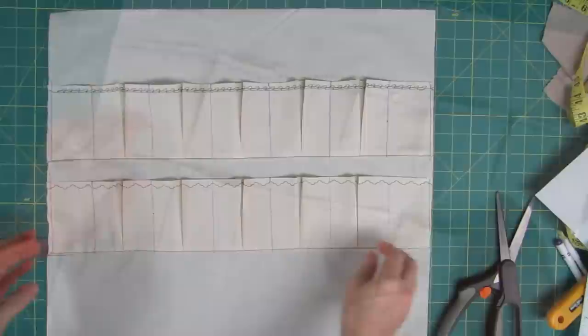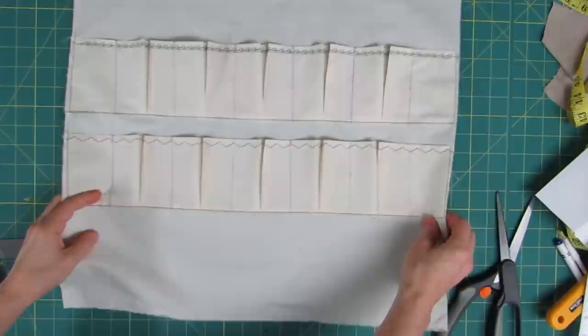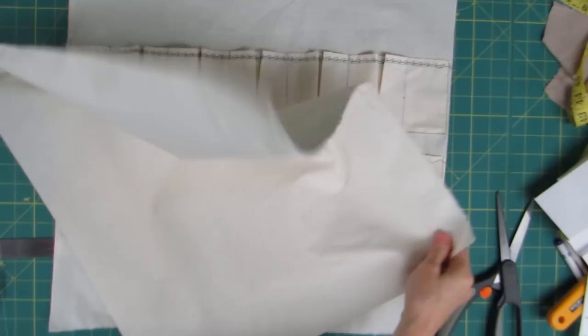Now I have all the pockets sewn on the front down here at the bottom. And if your basting is showing, obviously I used green, but you can pull that out now if you'd like to. So the next thing we need to do is take the other apron body, which is the back of our apron.